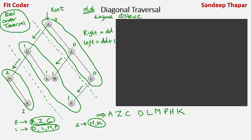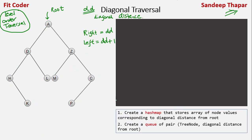The algorithm is quite similar to level order traversal — we just do some small modifications. If you have any doubts on how level order traversal works, you can check the link in the top right corner. Now let's see the pseudocode for the diagonal traversal. The data structure we require is a hash map that stores the array of node values corresponding to the diagonal distance from the root.